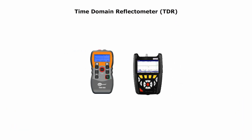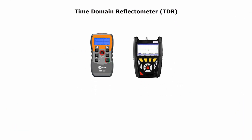Time-domain reflectometer, or TDR, is a cable tester with many advanced features which include continuity testing, wire map testing, length of cable, location of breaks, and many more functions. TDR is a tool you must have if you troubleshoot cables in this field.